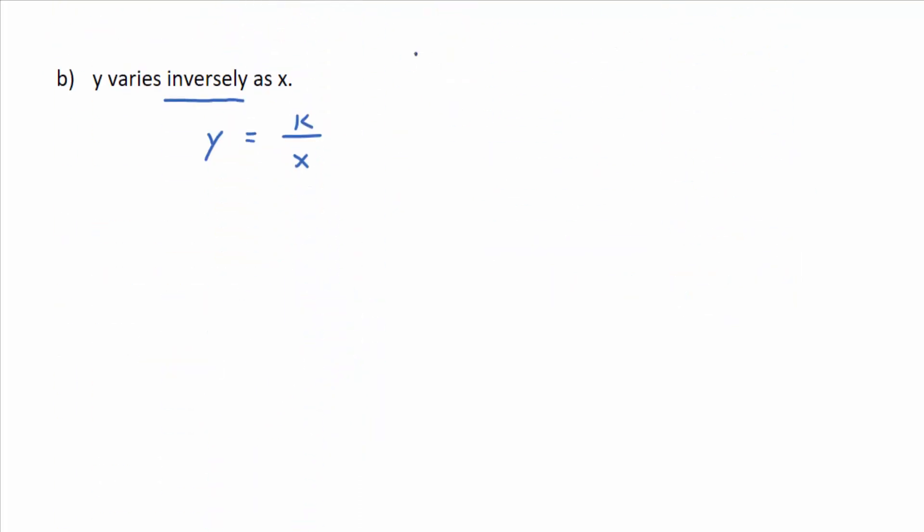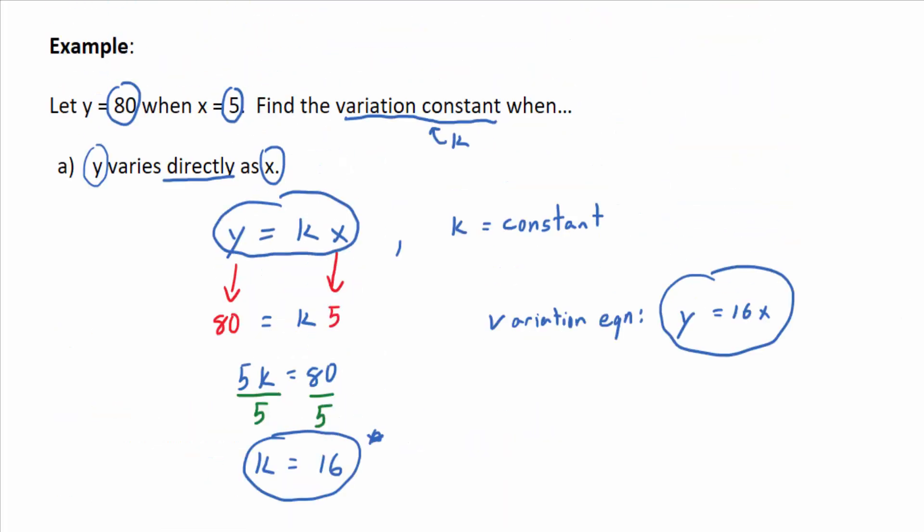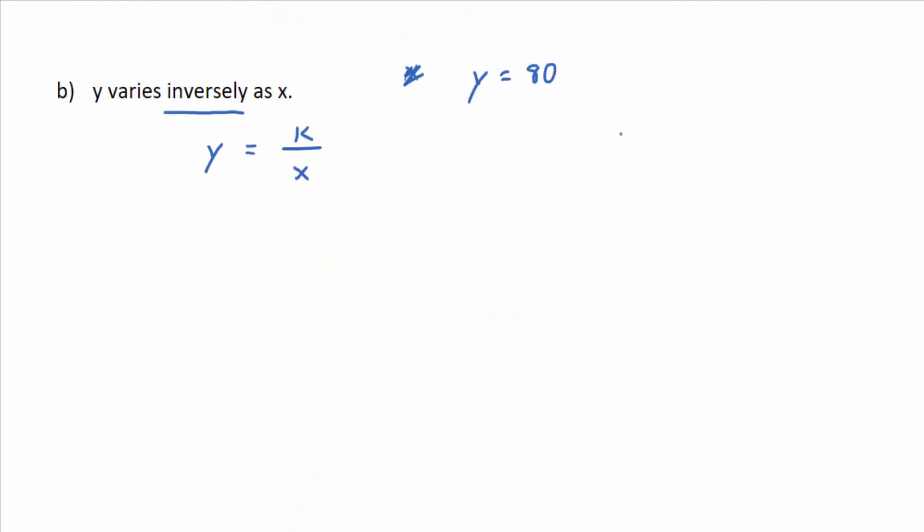So x, well, it's usually told, the story's usually told in terms of what we would think of as the dependent variable, the output variable y. So y is equal to 80 when x is equal to 5. So this is the given information, the given measurements or given data.